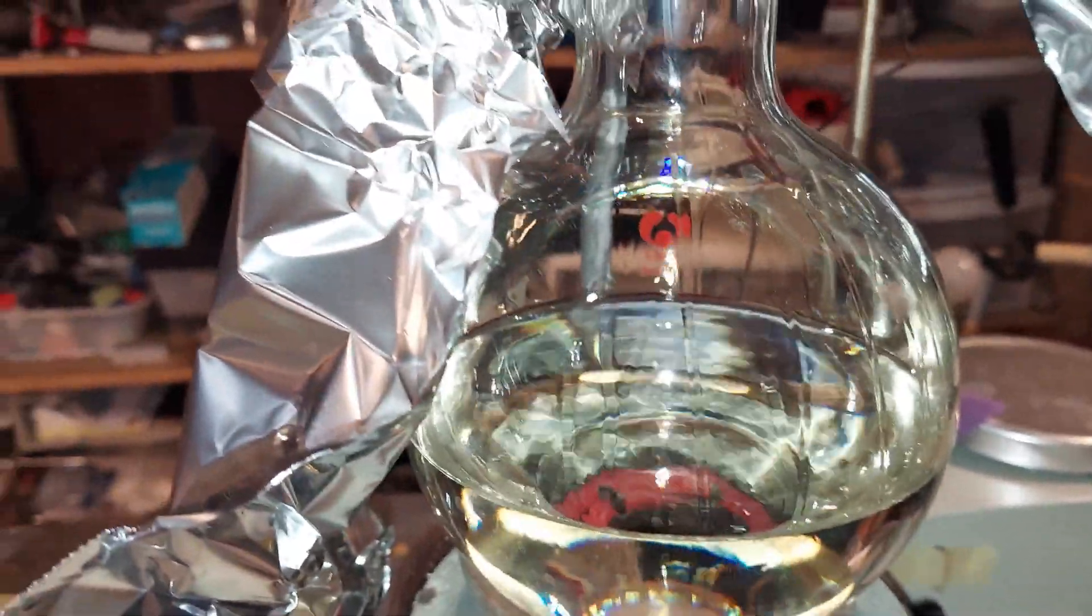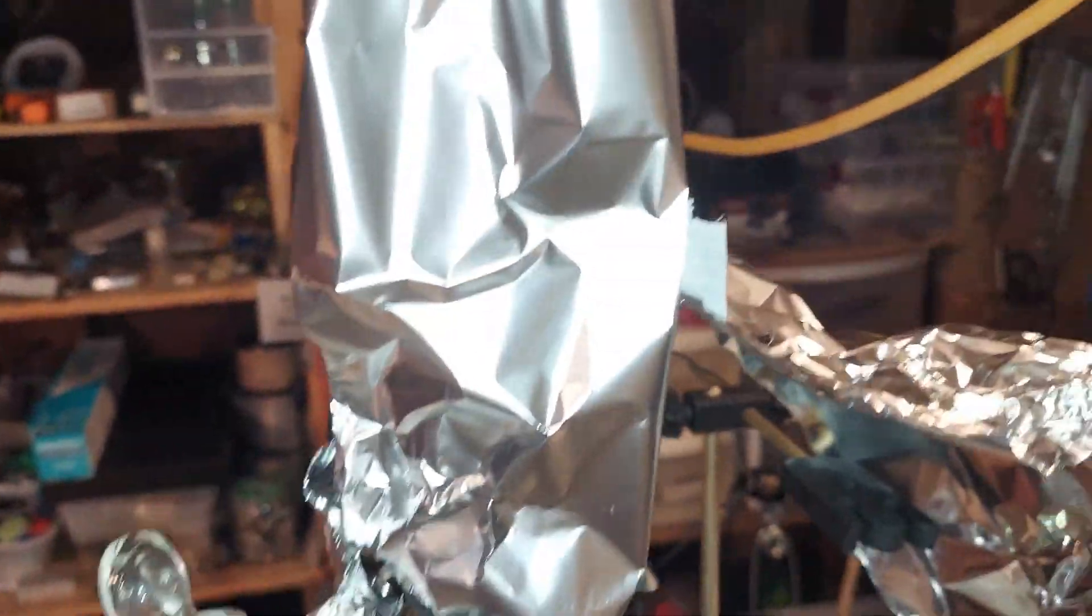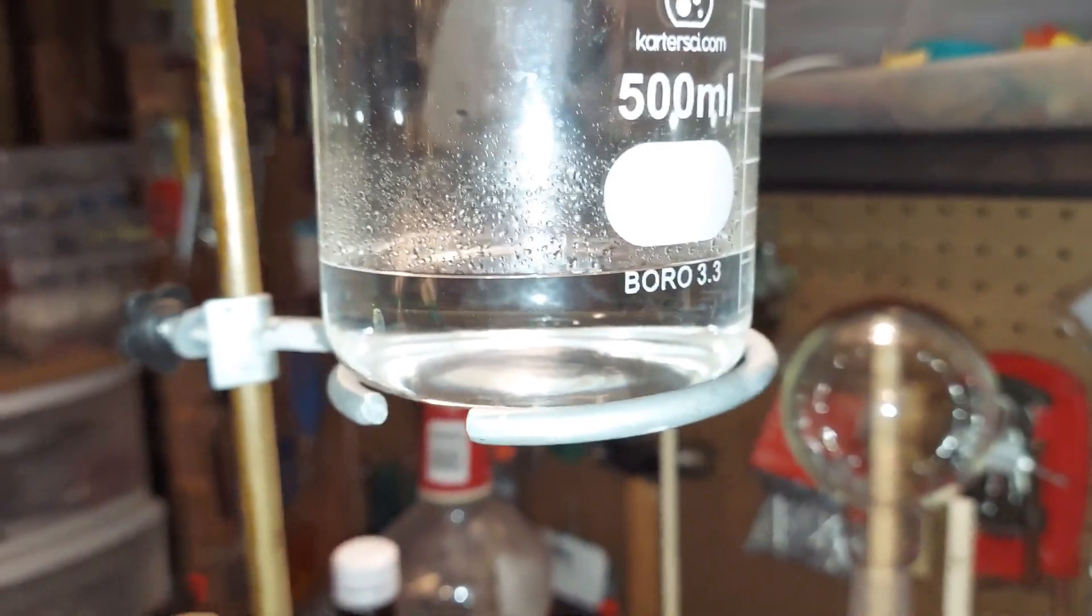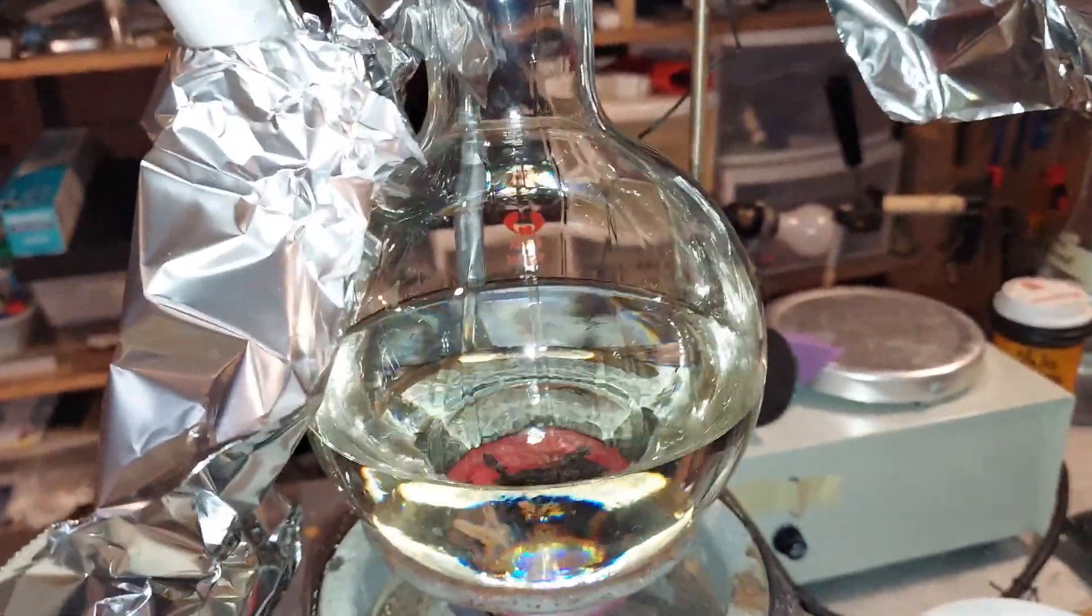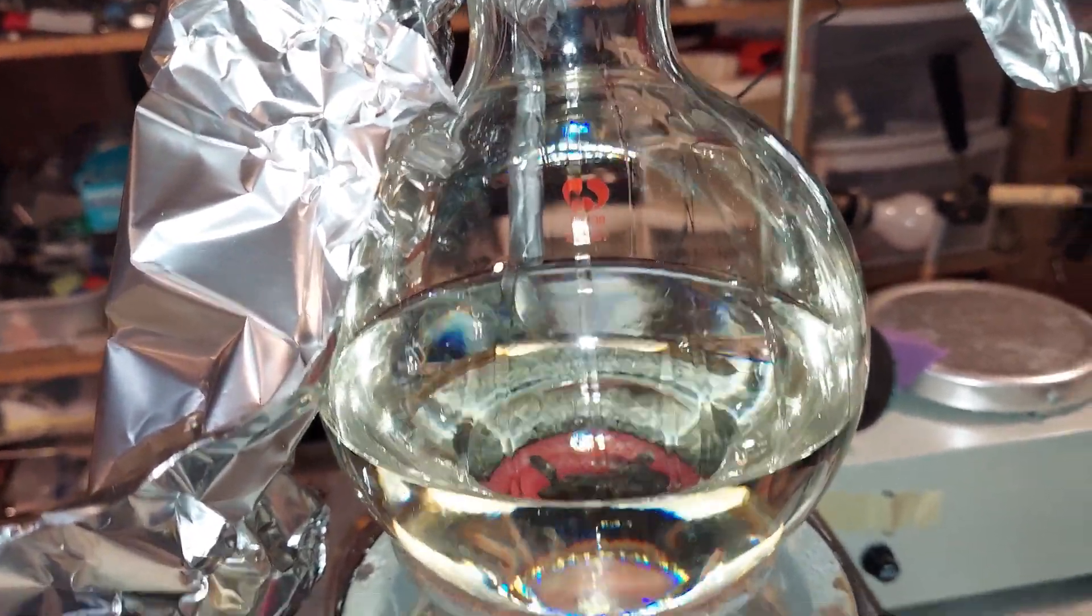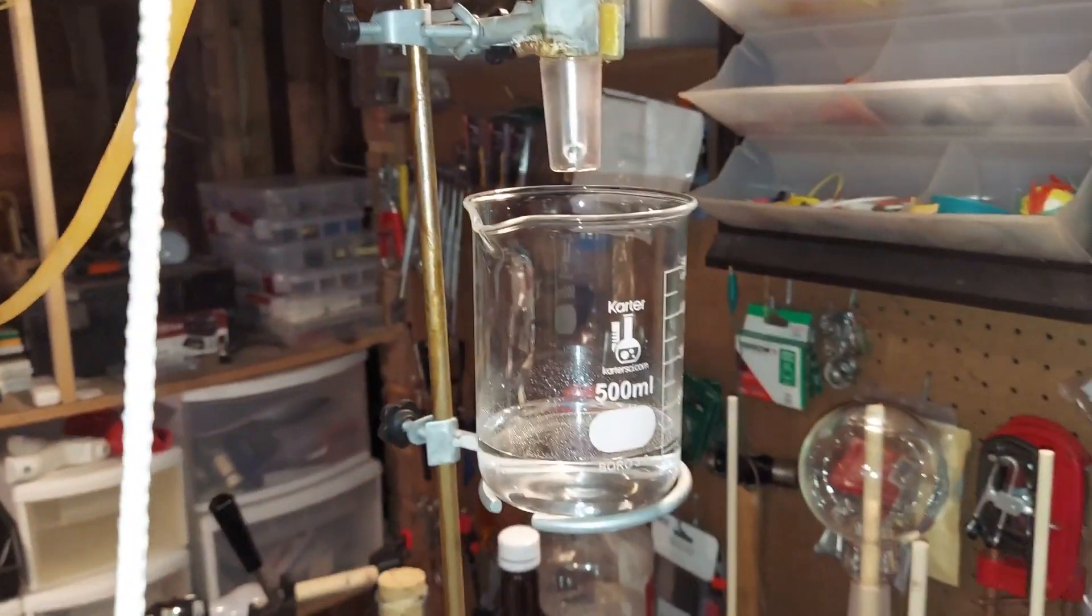The nitrogen dioxide gas, the brown gas, is driven out of the solution at first. You can see over here what's first dripping out looks pretty clear. That's water with a little bit of nitric acid, so it's pretty weak nitric acid. Once the temperature reaches 120 degrees, it's about 102 right now, the nitric acid will start coming over and I'll remove the water.